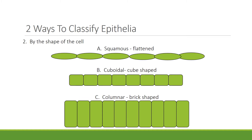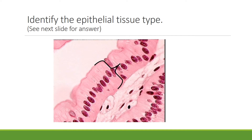The second way to classify epithelia is by the shape of the cell. Cells can be flattened, known as squamous; cube-shaped, known as cuboidal; or brick-shaped, known as columnar. Based on the previous slides, can you identify the type of epithelial tissue? The answer is on the following slide.